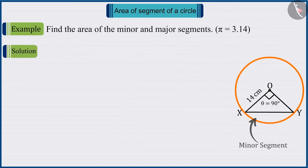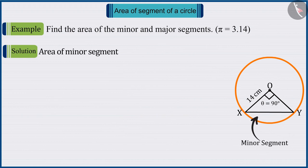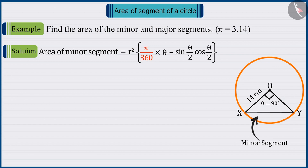The formula for the area of the minor segment is R² multiplied by pi upon 360 into theta minus sin theta by 2 into cos theta by 2.